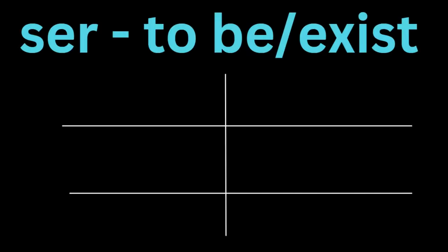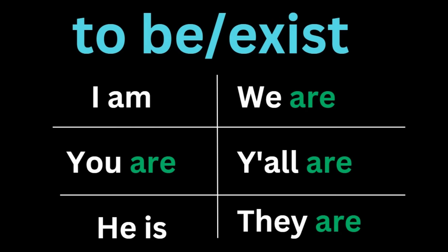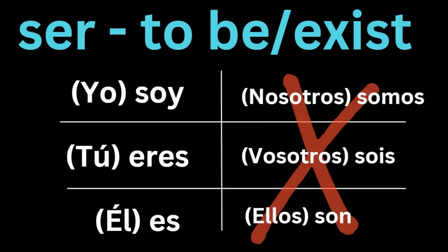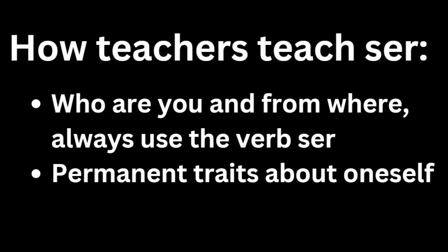The verb 'ser' in Spanish means to be — as in being or existing. It is an irregular verb, meaning you cannot conjugate it like regular verbs; its form completely changes for every pronoun. The conjugations are: yo soy, tú eres, él/ella/usted es, nosotros somos, vosotros sois, ellos son. The best advice is to just memorize these conjugations since there is no pattern to follow. However, ser is not used the same way as 'to be' in English, and teachers sometimes use rhymes to describe it.